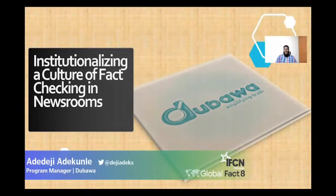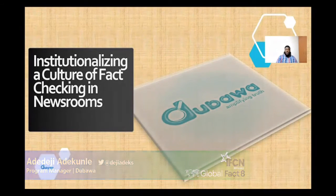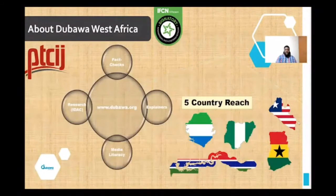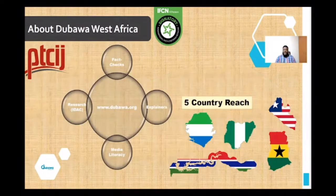Hello everybody. My name is Deji Adekunle, and I'm the team lead for Dubawa West Africa, a project of the Premium Times Center for Investigative Journalism. I'm here to tell you how we've gone about institutionalizing a culture of fact checking in newsrooms across the region. Dubawa West Africa is a project of PTCIJ and we are certified signatories of the IFCN Code of Principles. We have offices in Nigeria, Ghana, Gambia, Liberia, Sierra Leone—basically English-speaking West Africa.